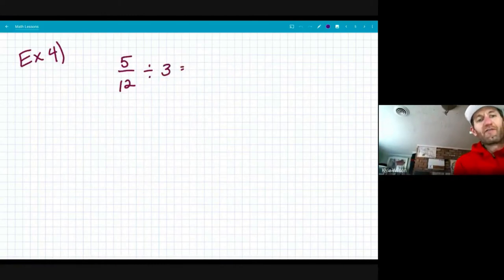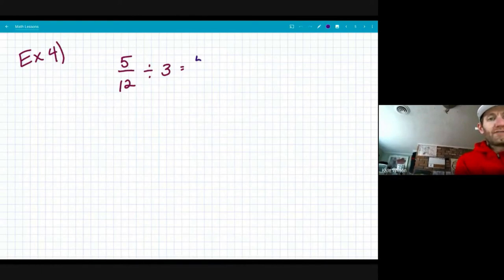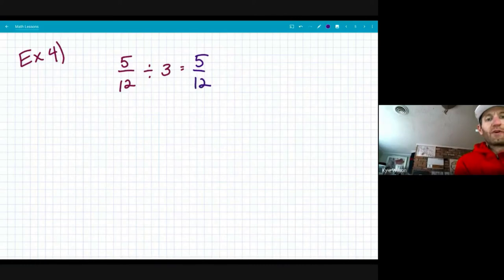In this case, I have five twelfths and I'm going to be dividing it by three. So I'll take five twelfths and just leave it the way it is.